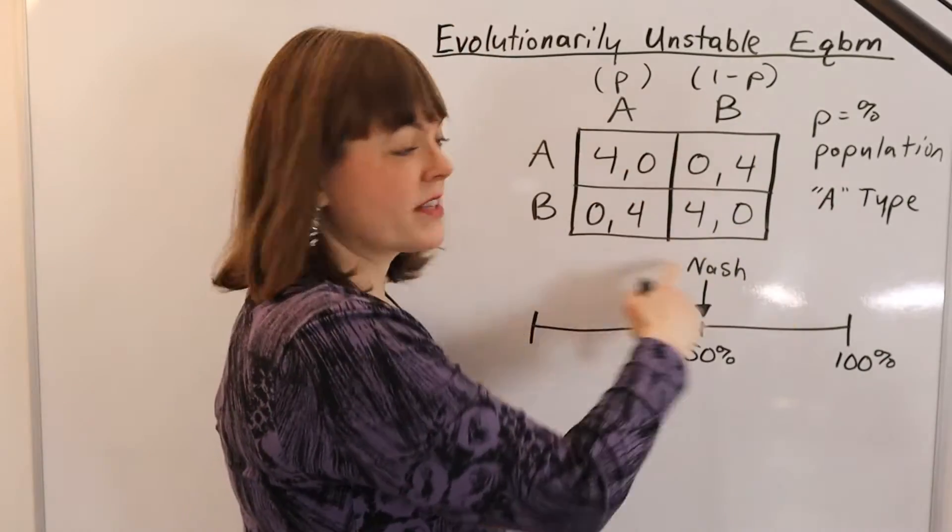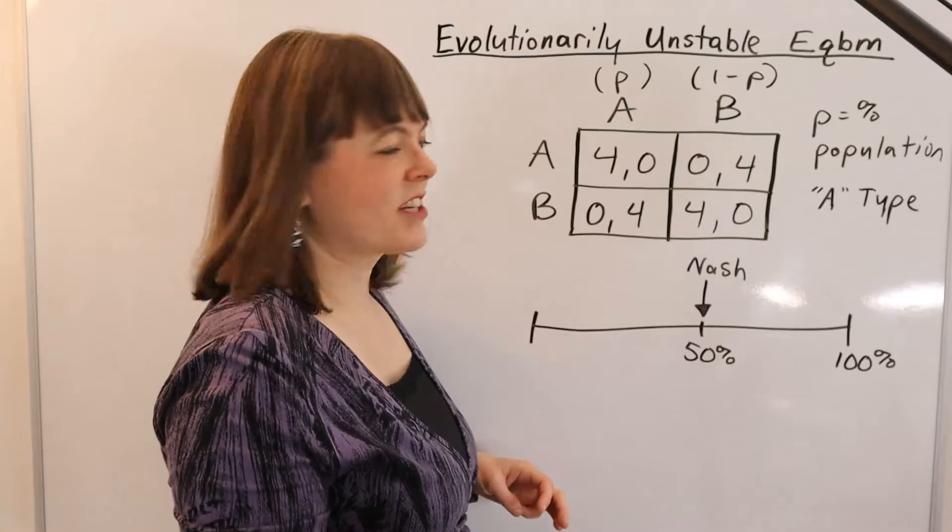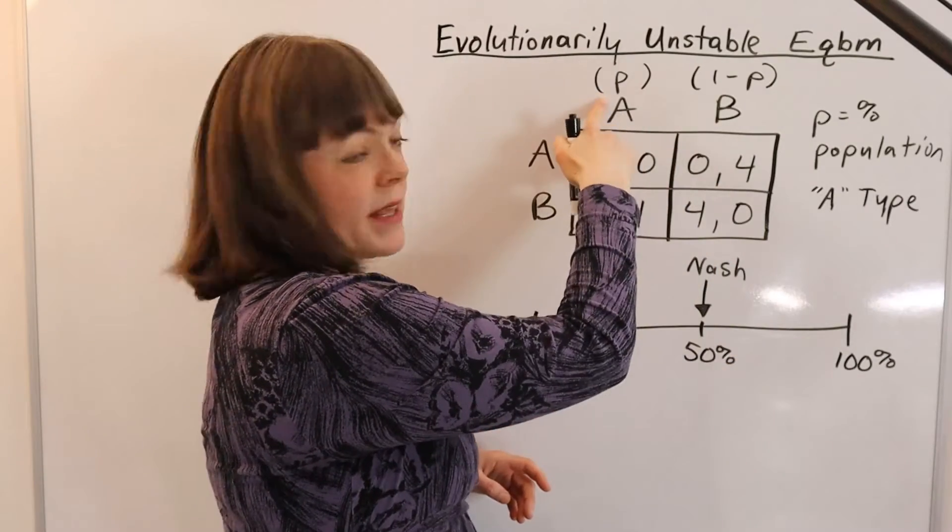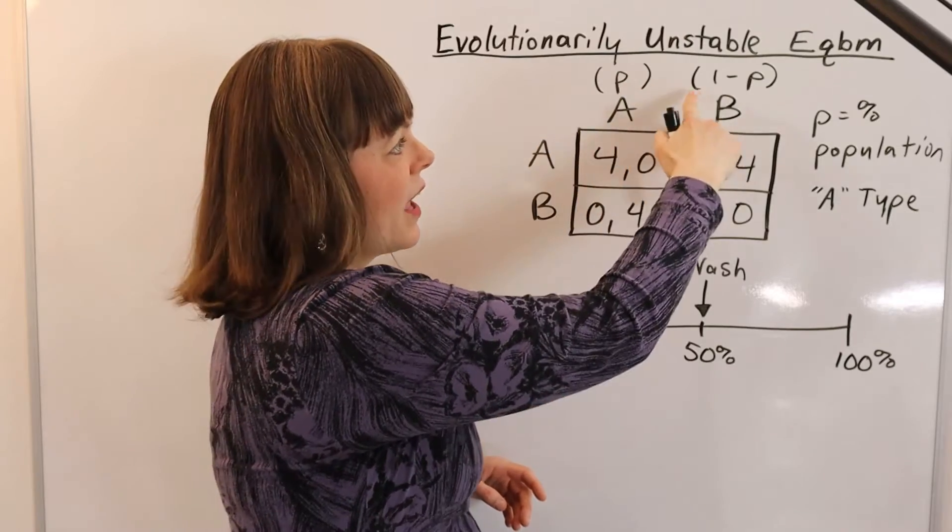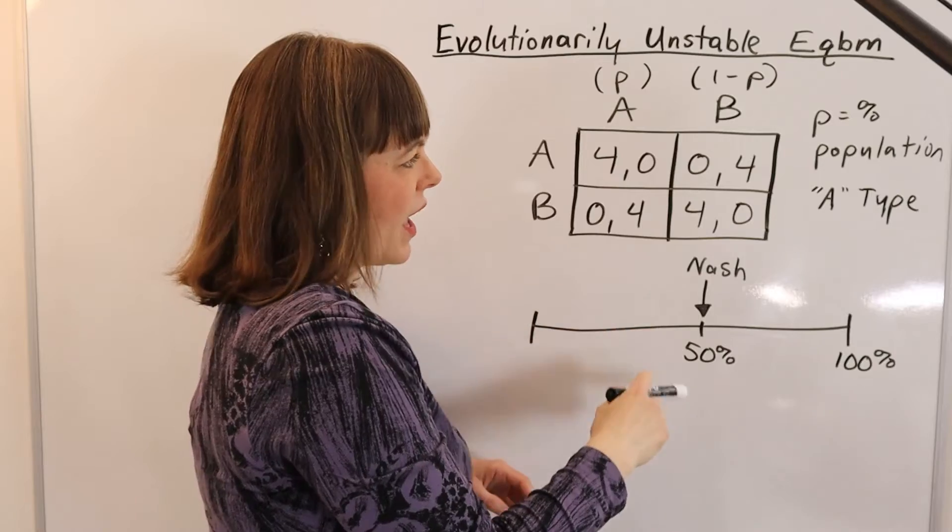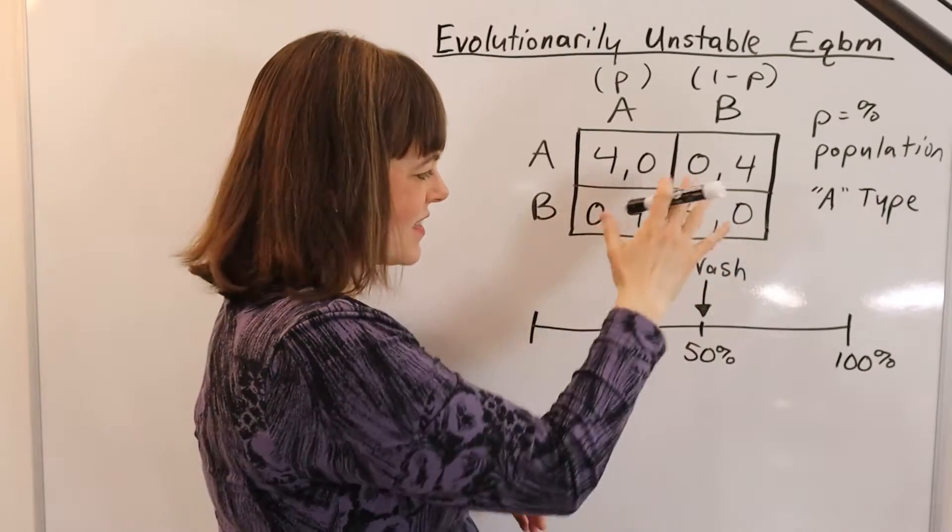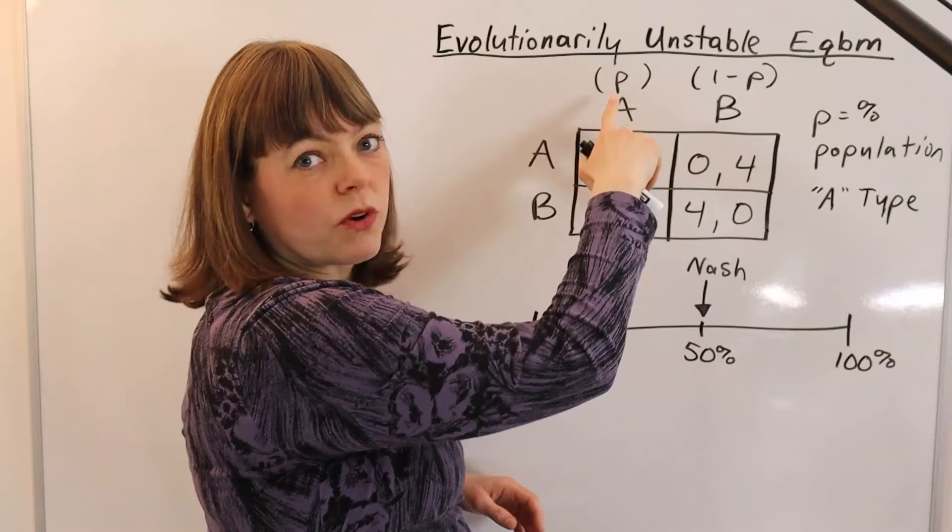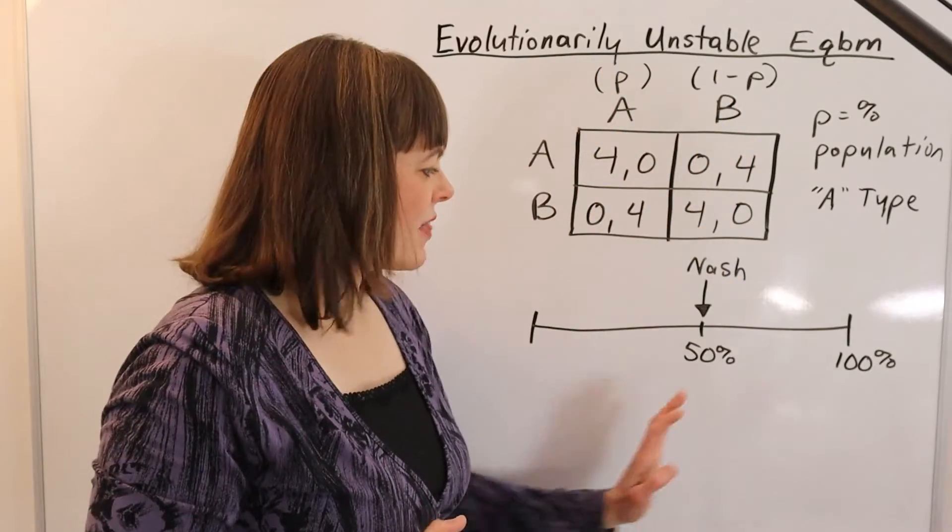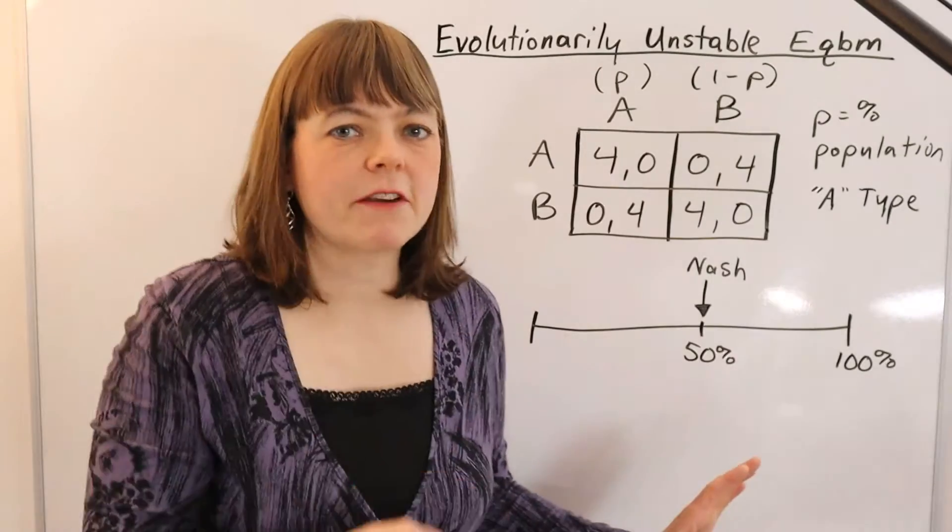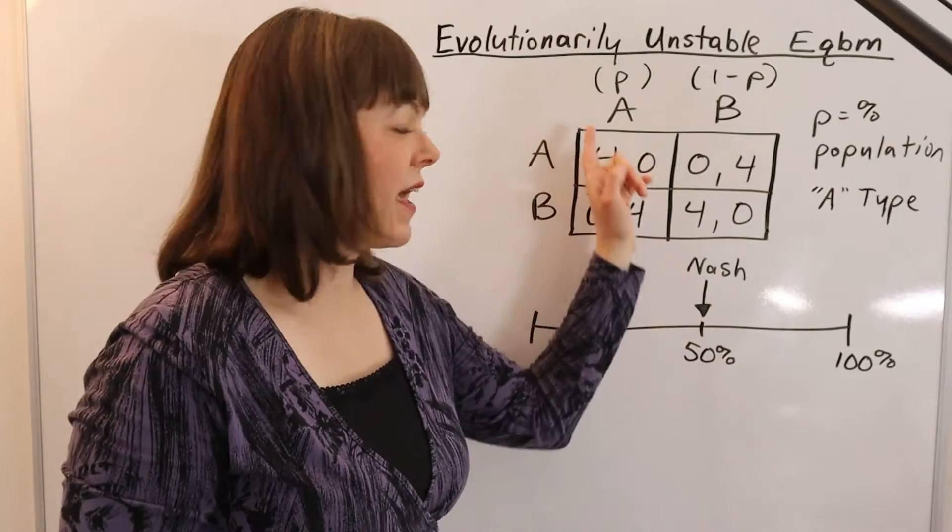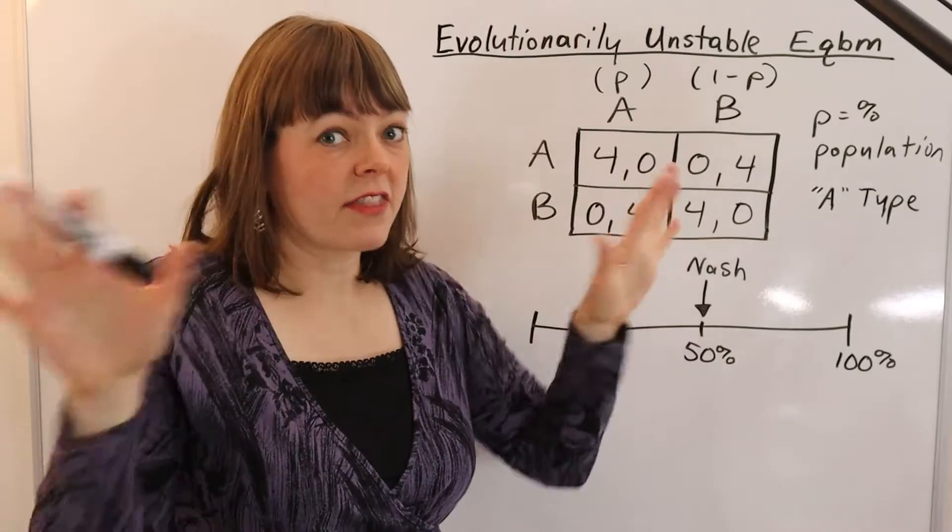You can solve this game for the mixed strategies Nash equilibrium. The mixed strategy happens where P% of the population is type A, and 1 minus P percentage is type B. The game theory solution to this game is that 50% of the population will be A types and 50% will be B types. That means if you have a population where exactly 50% is A every generation, then nothing's going to change.